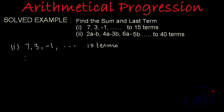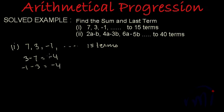How do we check? We subtract the first term from the second term: 3 minus 7 gives us minus 4. Then we subtract the second term from the third term: minus 1 minus 3 also gives us minus 4. The difference is equal to minus 4, which is uniform, so this progression is an arithmetical progression where the first term a is 7, and the common difference d is minus 4.